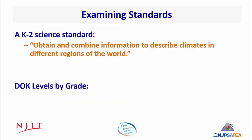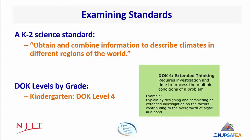For kindergarten, obtaining and combining information to describe climates in different regions of the world would likely be DOK 4. Think of all the intermediate steps involved in this performance expectation. A student must learn what climate and regions are, know how to find information on climate, determine how to choose what information to use, and finally decide how to pull all the information together to describe climate in different regions.